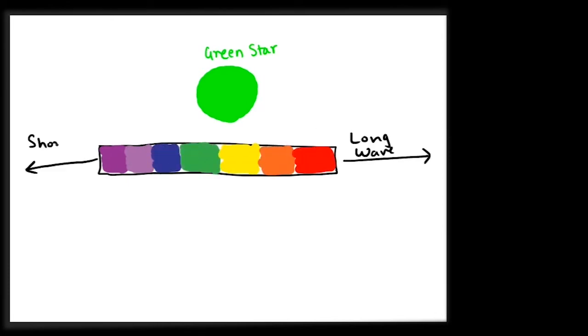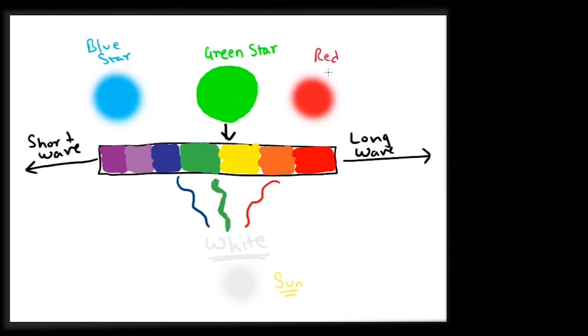This happens because a green star will emit some light in red and blue too, all of which mix together to appear white. Interestingly, our star, the Sun, is in fact a green star. And that explains why all plants are mostly green in color.